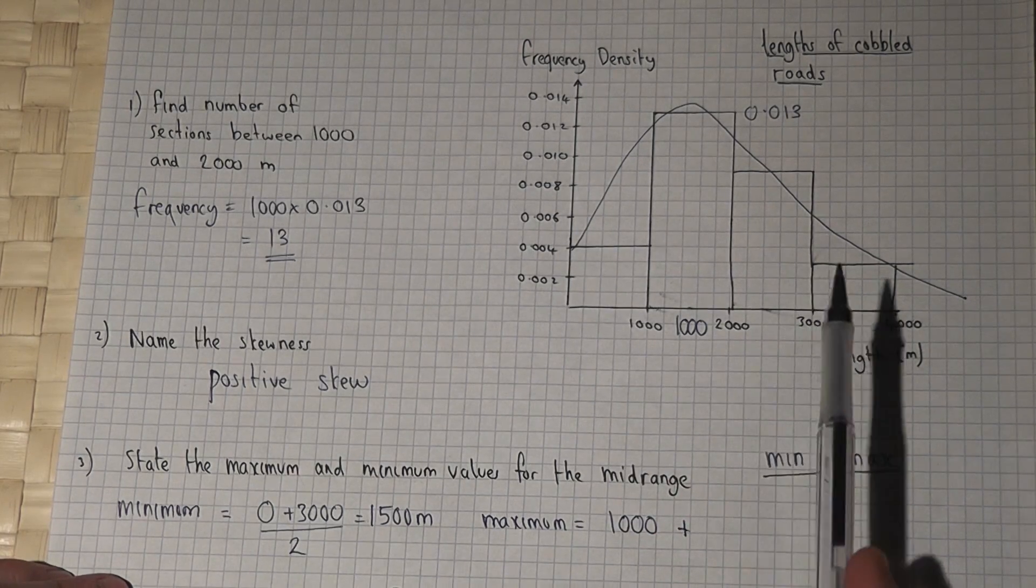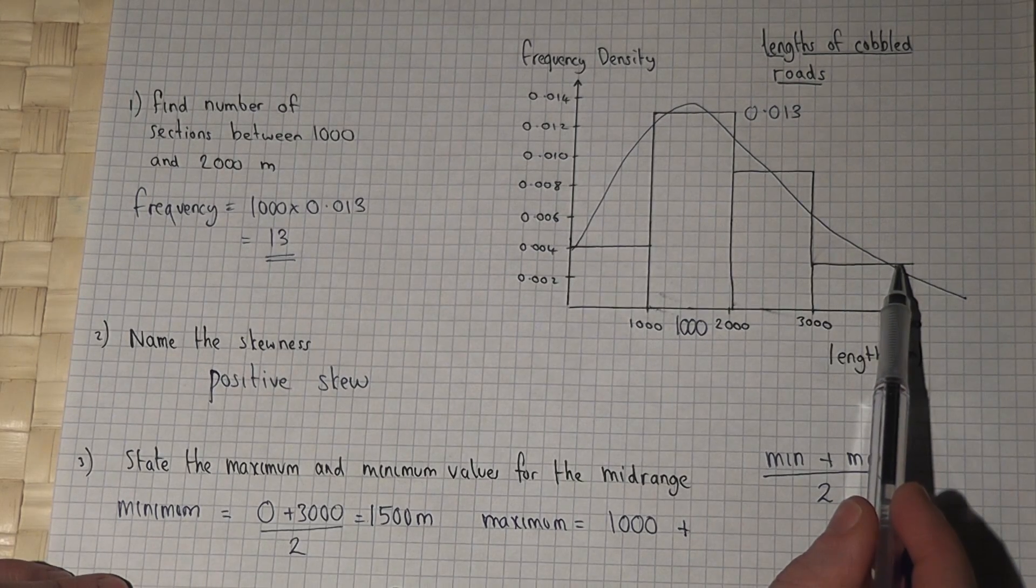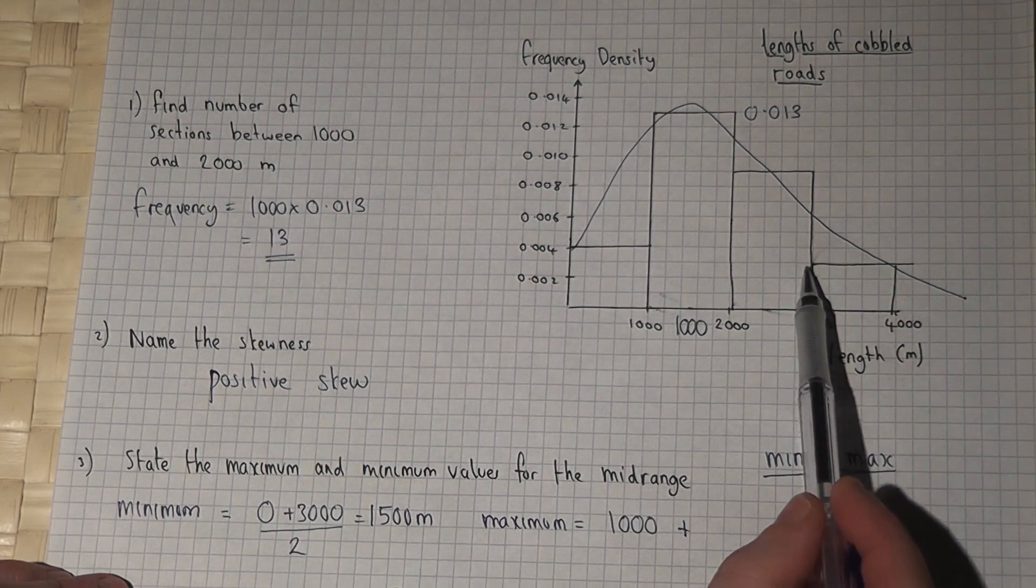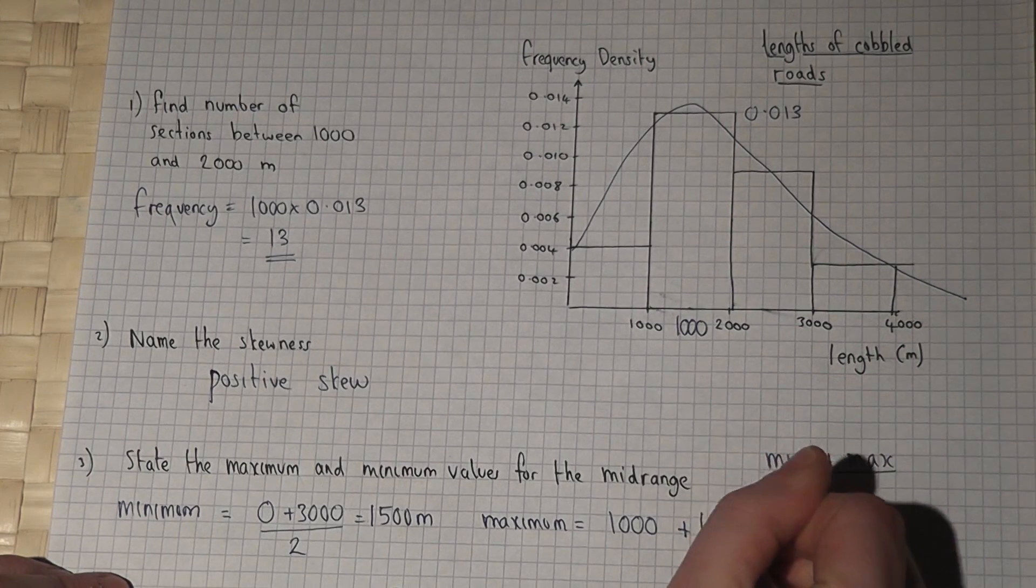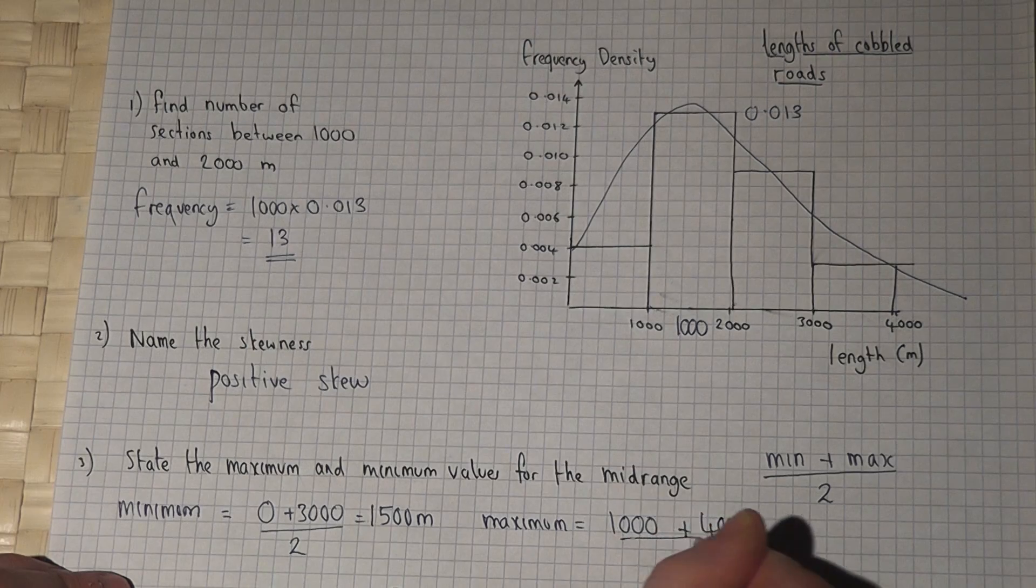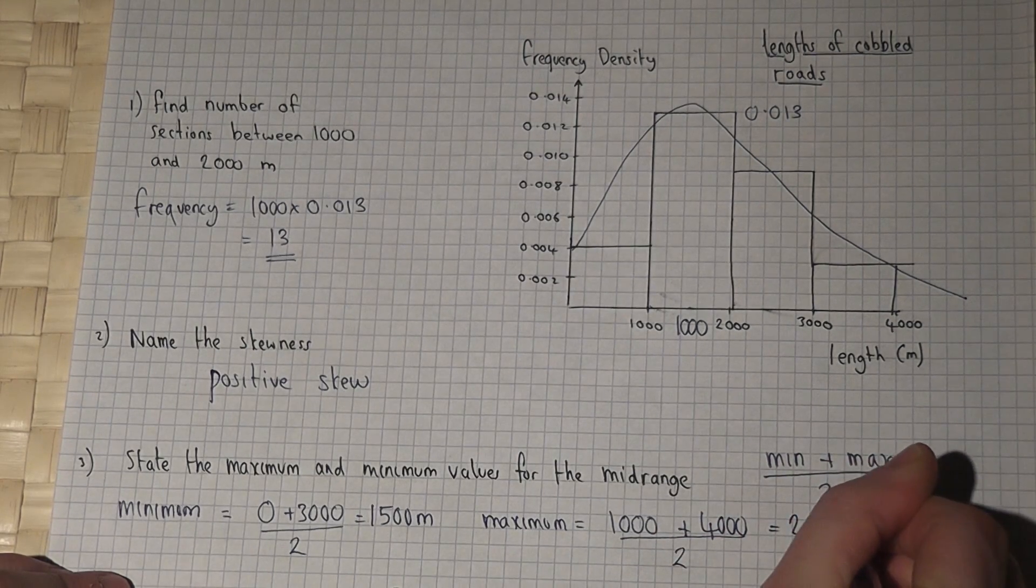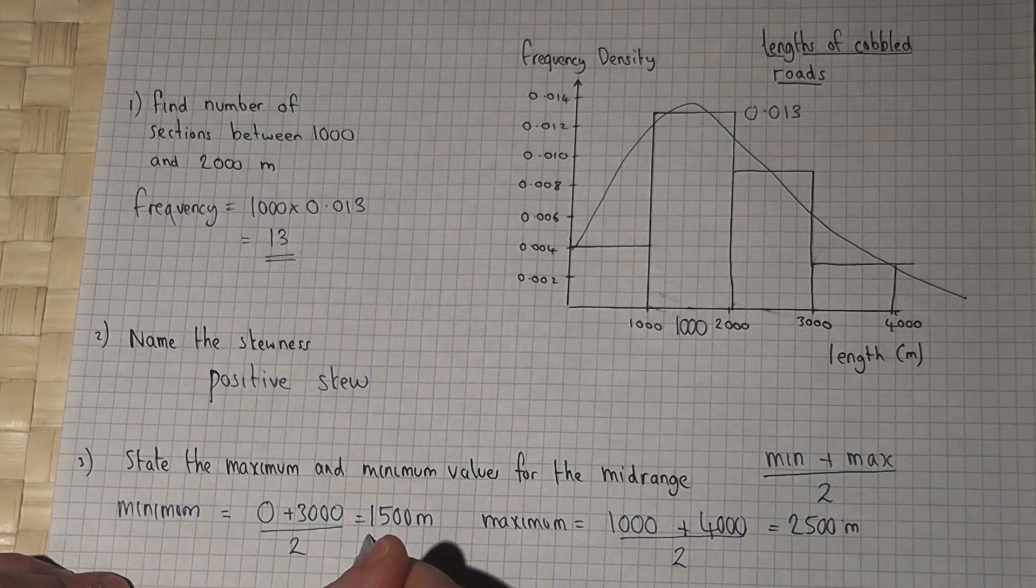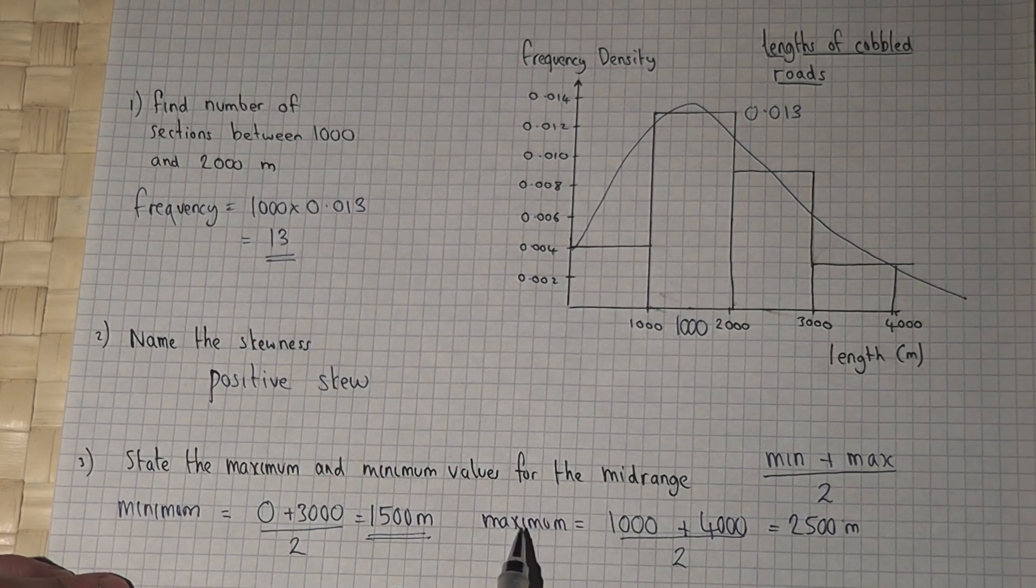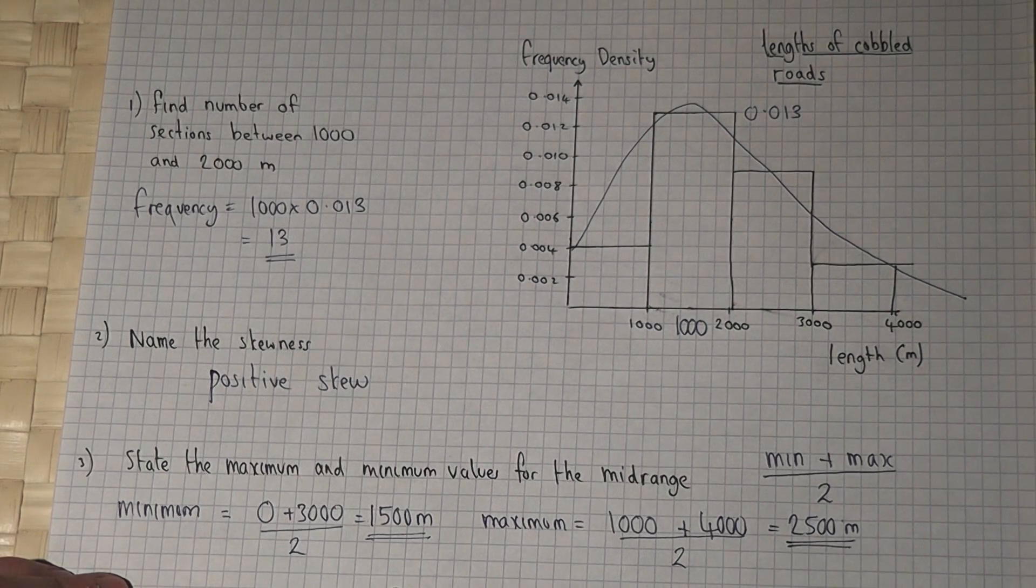The maximum possible length of cobbled road could be as high as 4000. So it's 1000 plus 4000 divided by 2, which works out at 2500 meters. The minimum possible mid-range is 1500 and the maximum possible mid-range is 2500 meters.